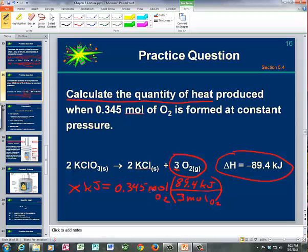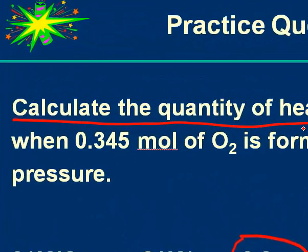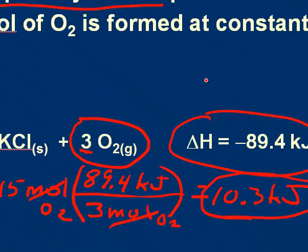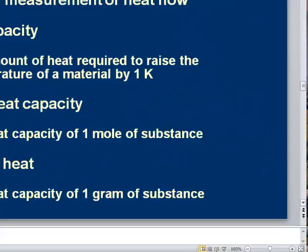Moles of O₂ over moles of O₂ cancel, and we get 10.3 kJ of heat produced in this reaction. Again, why don't I include the negative sign? Because I wasn't asked for delta H — I was just asked for the quantity of heat produced. It's understood that it's an exothermic reaction and that heat is a product of this exothermic reaction.